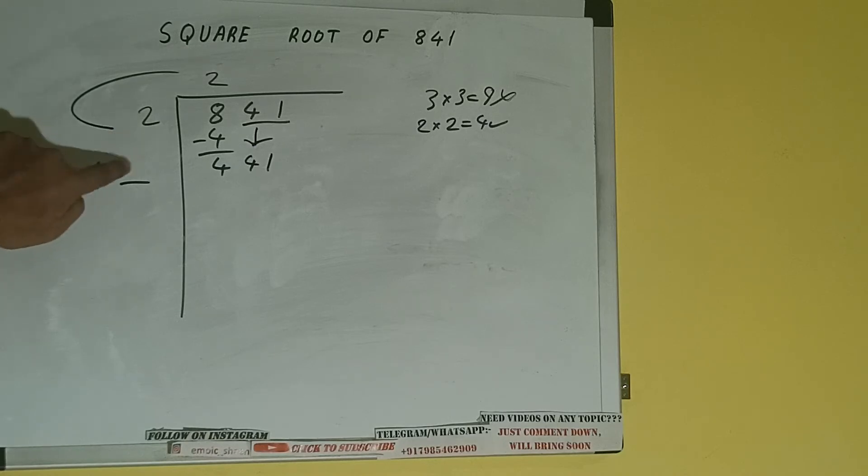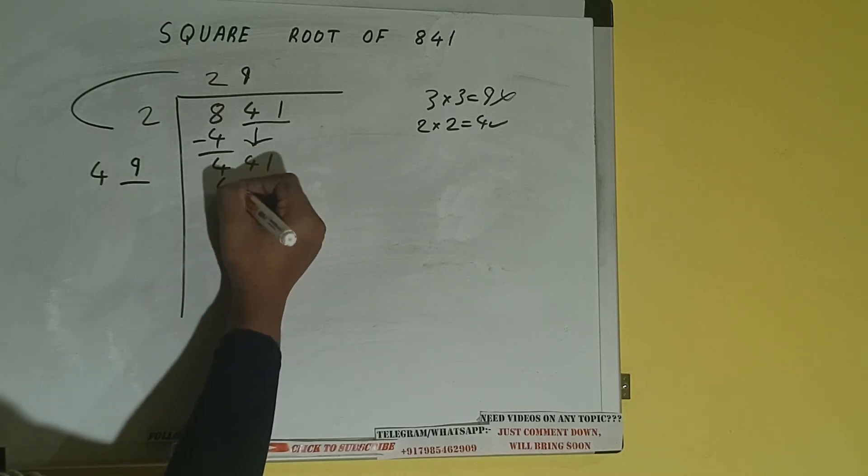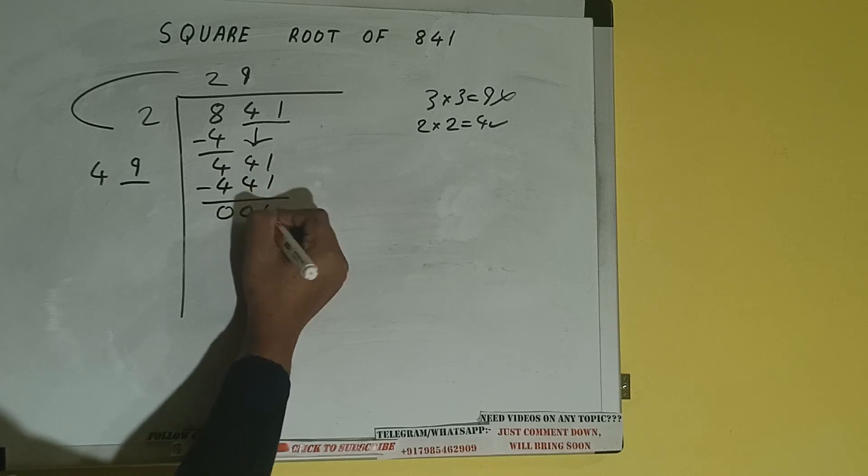Now whatever number we write here we have to write here also. So if we write 9 here and 9 here, we'll be having 441, subtract and we'll be getting 0.